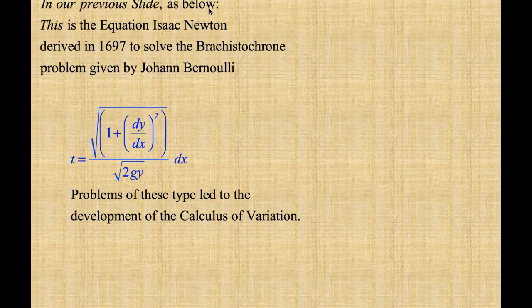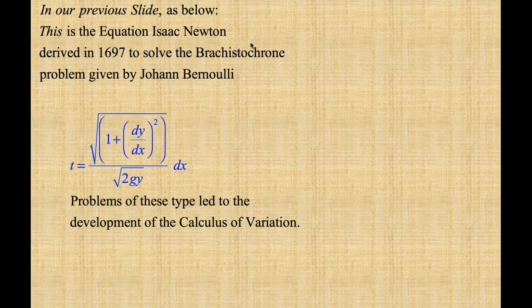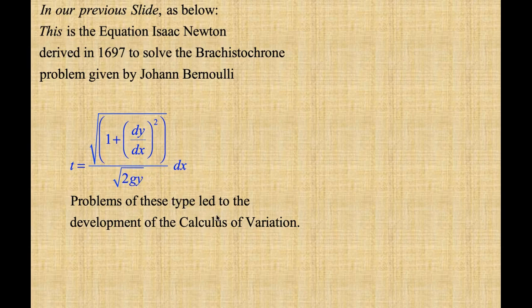This is the equation Isaac Newton derived in 1697 to solve the brachistochrone problem. These types of problems led to the development of the calculus of variations.